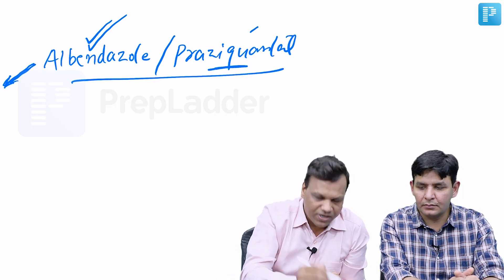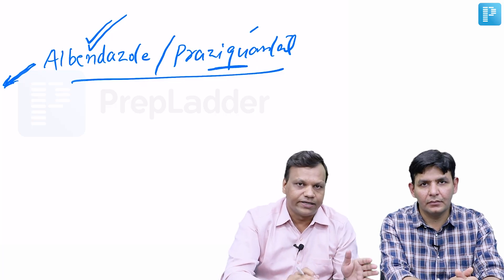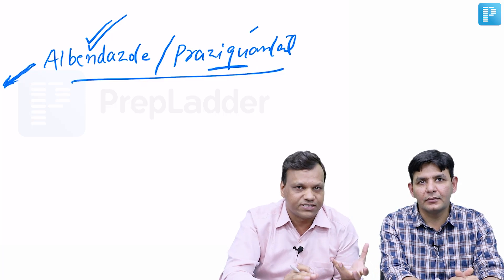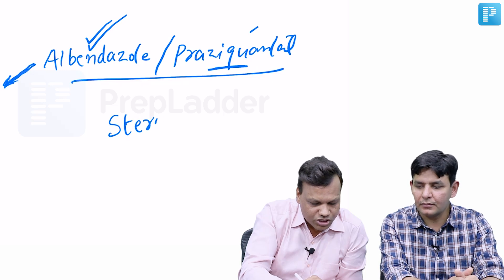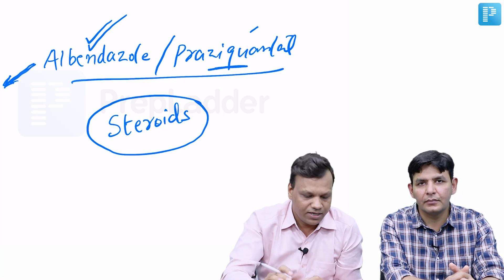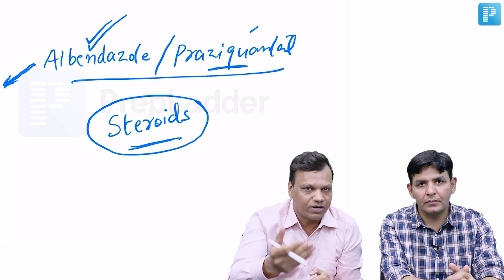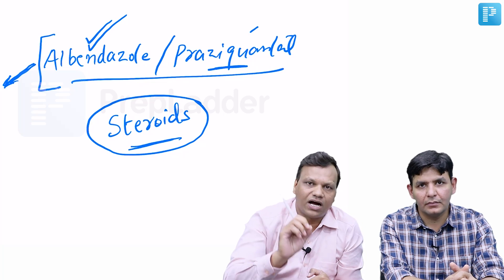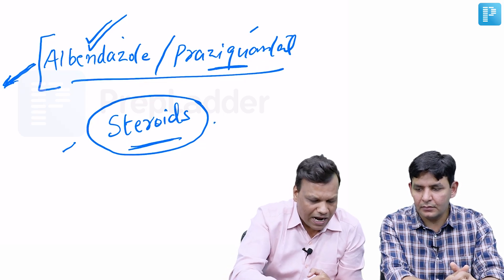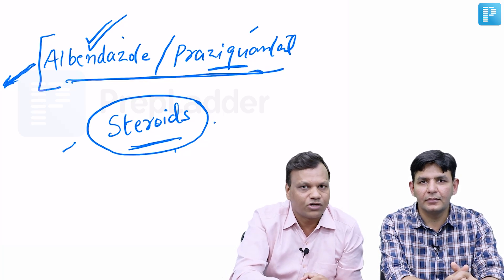When albendazole or praziquantel is given, it starts killing the Cysticercus. As the larva is killed, it releases substances that cause brain inflammation and can aggravate the disease. To prevent this, steroids are given as anti-inflammatory cover. Steroids must be started before albendazole so they are already active in the brain before inflammation occurs. The anti-parasitic drug is given under steroid cover — steroids are started first, continued during treatment, and given for a few days even after stopping the anti-parasitic drug.